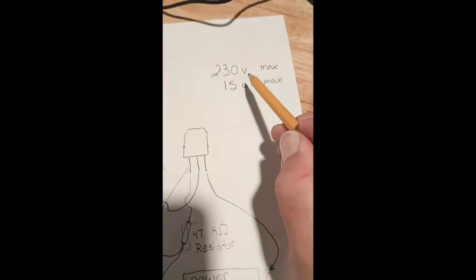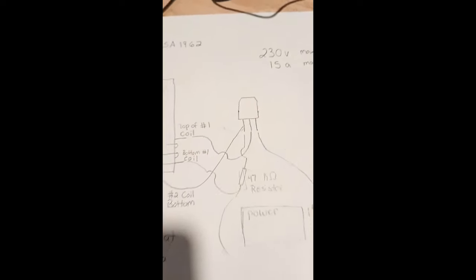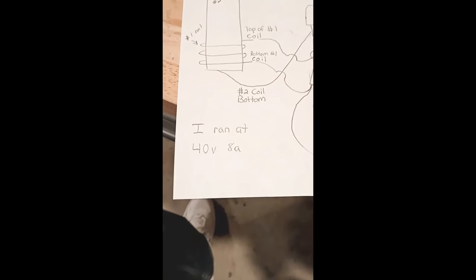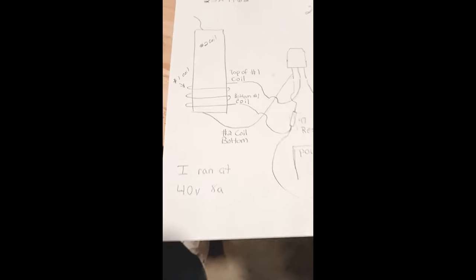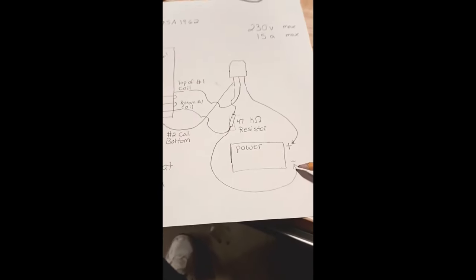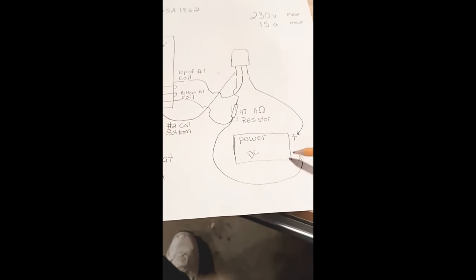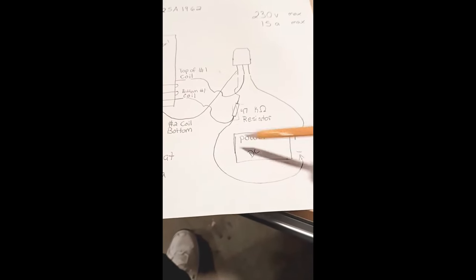It is max 230 volts, 15 amps. So we got a pretty good one here. I ran it at 40 volts and 8 amps. And that's for 45 minutes without it breaking down. So we're doing good there. Now, here's a little breakdown on this. Here's our power source. All we got to do on our DC power source. DC negative goes right over here to a 47k ohm resistor.